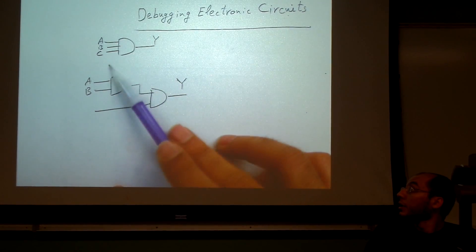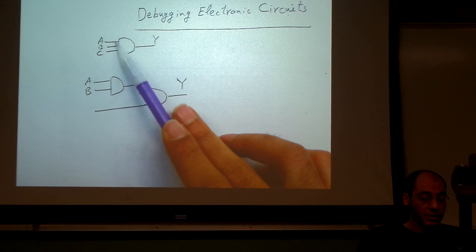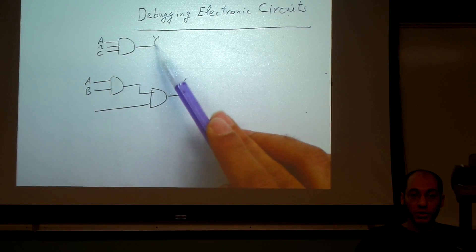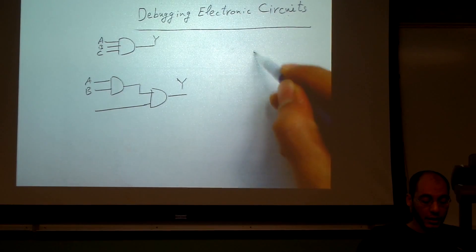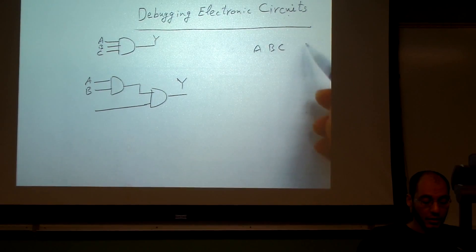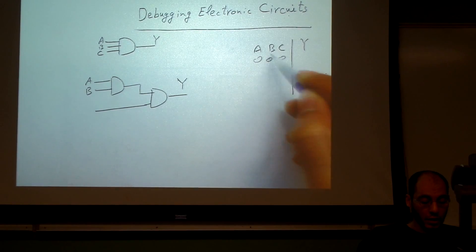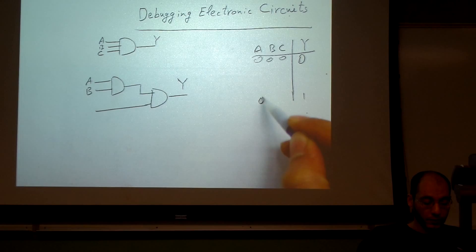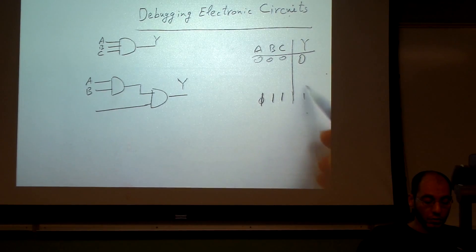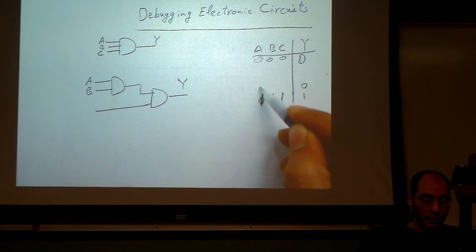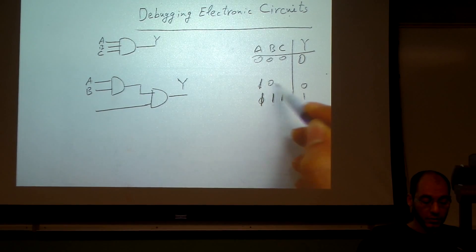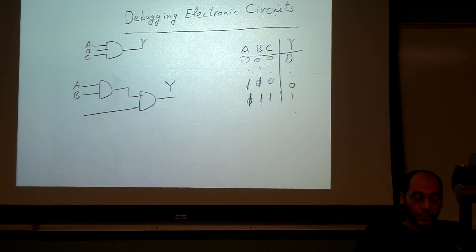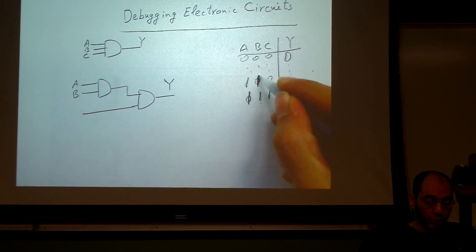We're going to assume that you want to connect a three-input AND gate. It has inputs A, B, and C, and the output is Y. The truth table says that whenever A, B, and C are anything other than 1-1-1, the output is going to be 0. Only when all three inputs are 1 will the output be 1.